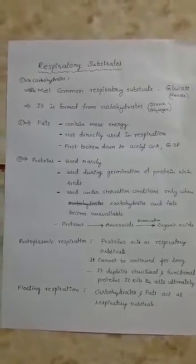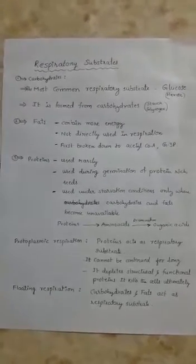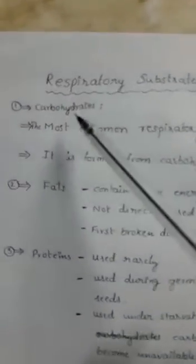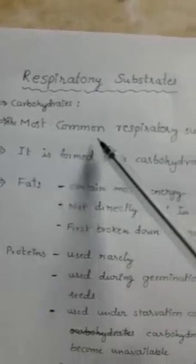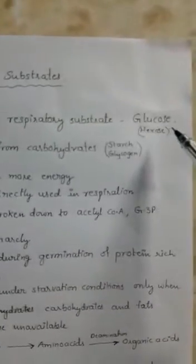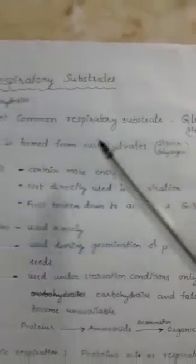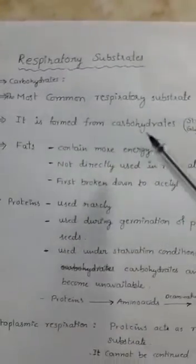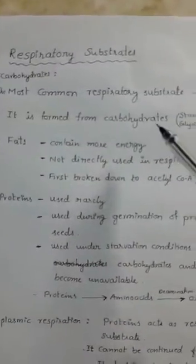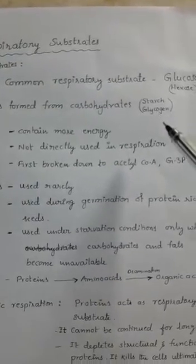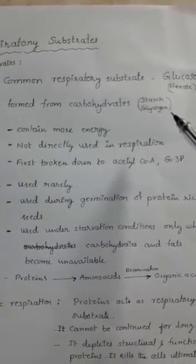The common respiratory substrates are carbohydrates, fats, proteins, and organic acids. The most common respiratory substrate is glucose. It is a hexose sugar. Glucose is formed from carbohydrates like starch in most plants and glycogen in animals and fungi.